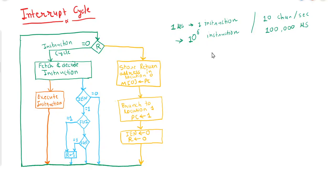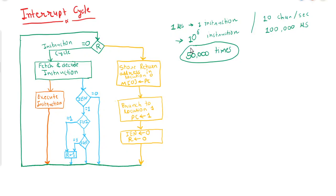So if we execute two instructions to check the flag bit of the input device and output device — to check whether the devices are ready for data transfer or not — then the CPU will check 50,000 times whether the input is available or not. This is a significant amount of time wasted in checking the input and output flags.